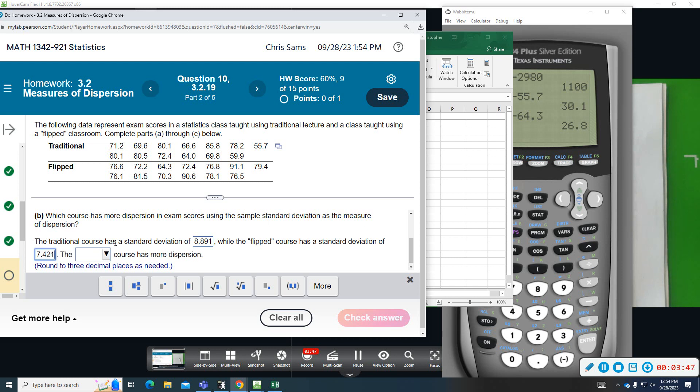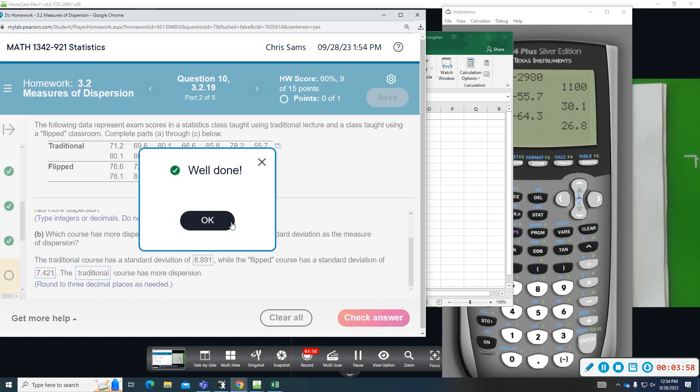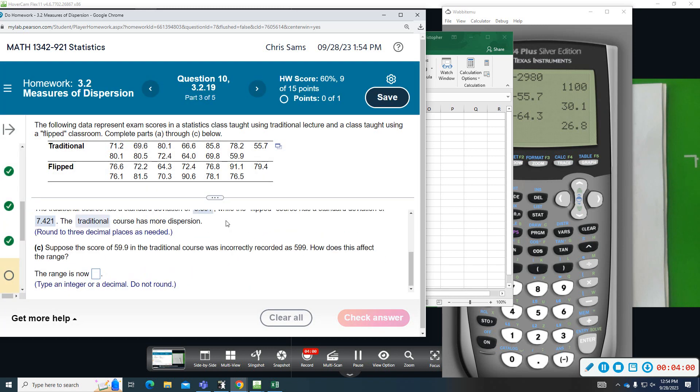And then the blank has more dispersion. And again, it's going to be the traditional because it has a bigger standard deviation. It kind of follows the same as the range. We're going to suppose the score of 59.9 in the traditional course was incorrectly recorded as 599. How does this affect the range?